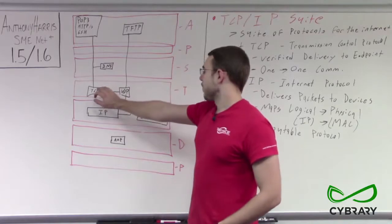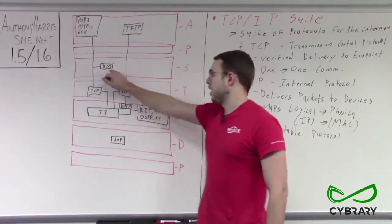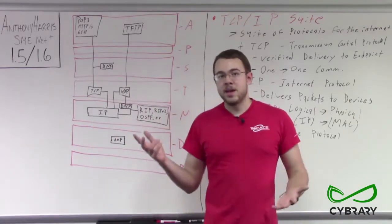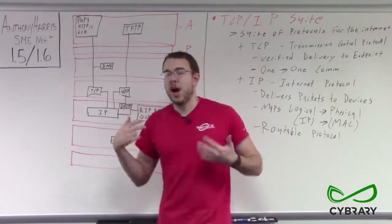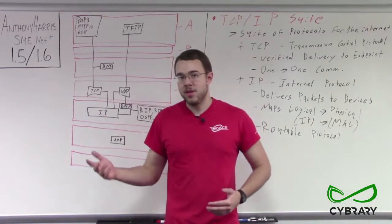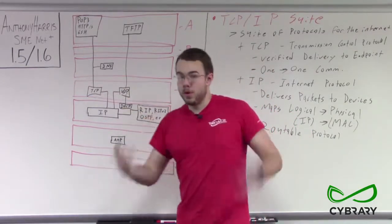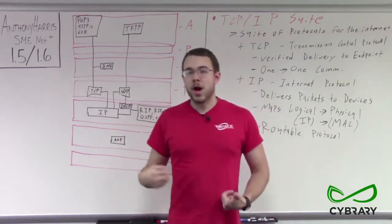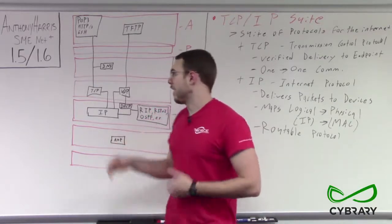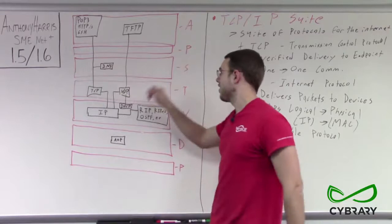Our TCP breaks off into our session layer, where we have DNS. DNS helps us resolve fully qualified domain names to particular IP addresses, or IP addresses to fully qualified domain names. We want to make sure we're getting those DNS packets, receiving them properly, and formatting them in the right order — so those are going to be based off of TCP. DNS is a session layer protocol.